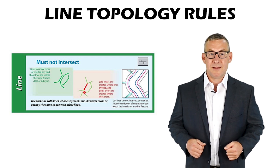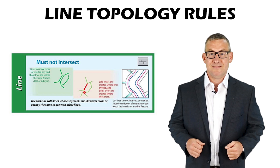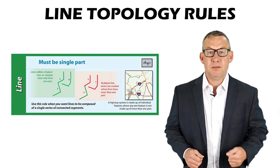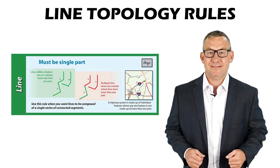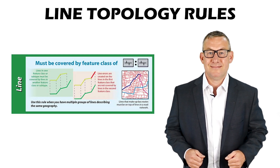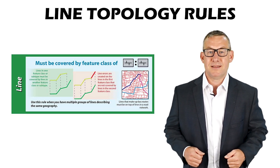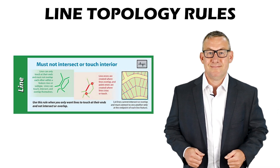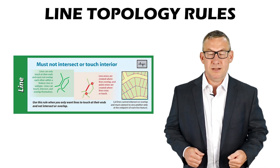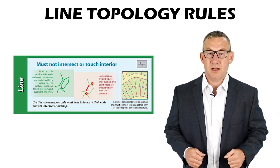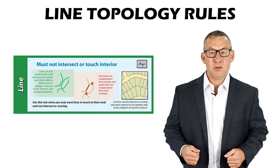Must Not Intersect With — lines must not cross any line in another feature class. Must Be Single-Part — lines must be one series of connected segments. Must Not Intersect Or Touch Interior — lines can only touch at their ends and must not overlap each other within a feature class. This rule is used for lot lines.